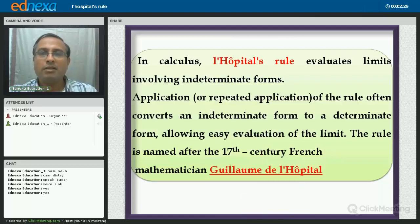In calculus, L'Hôpital's rule evaluates limits involving indeterminate forms. Now what do you mean by indeterminate forms? There are 6 to 7 indeterminate forms. For example, 0 upon 0, this is an indeterminate form in mathematics. Infinity upon infinity, this is again an indeterminate form.